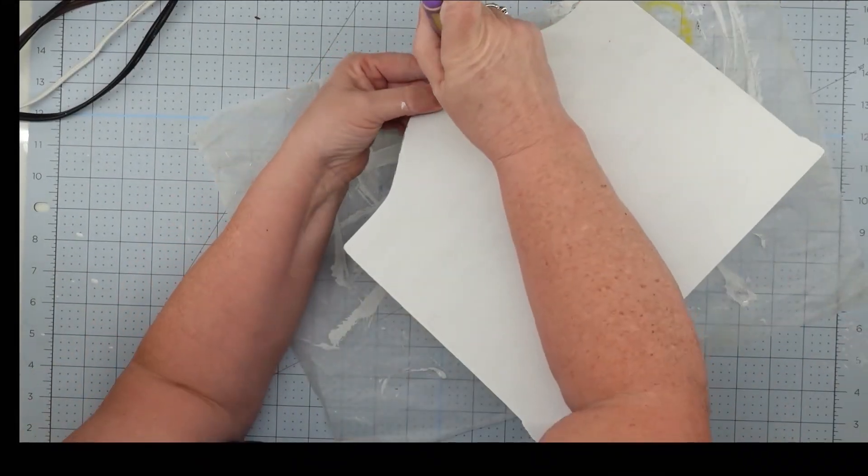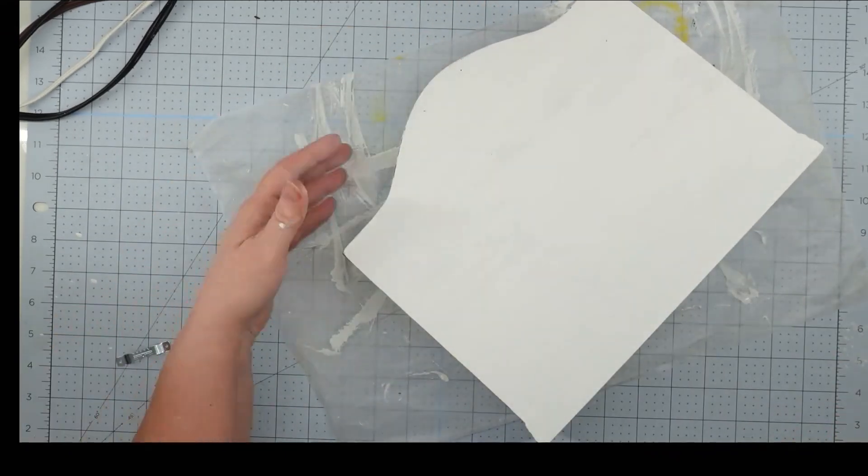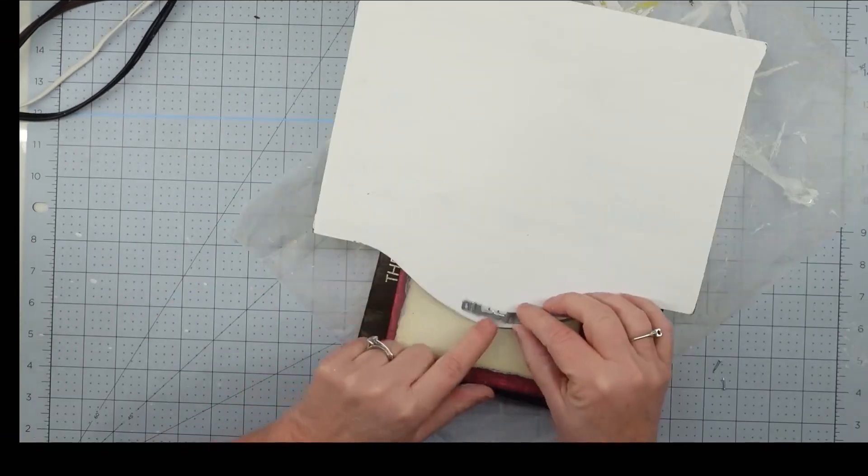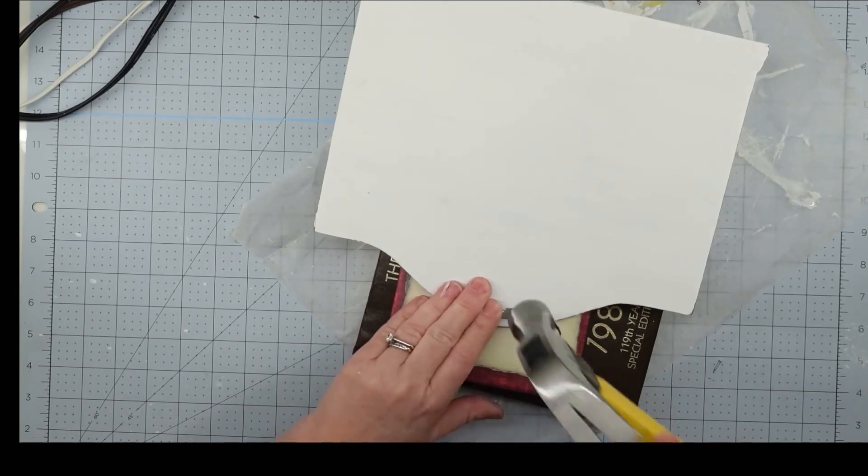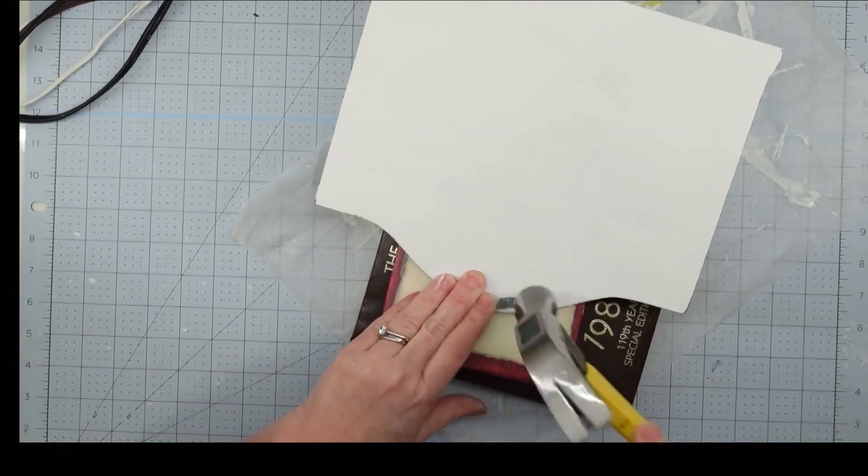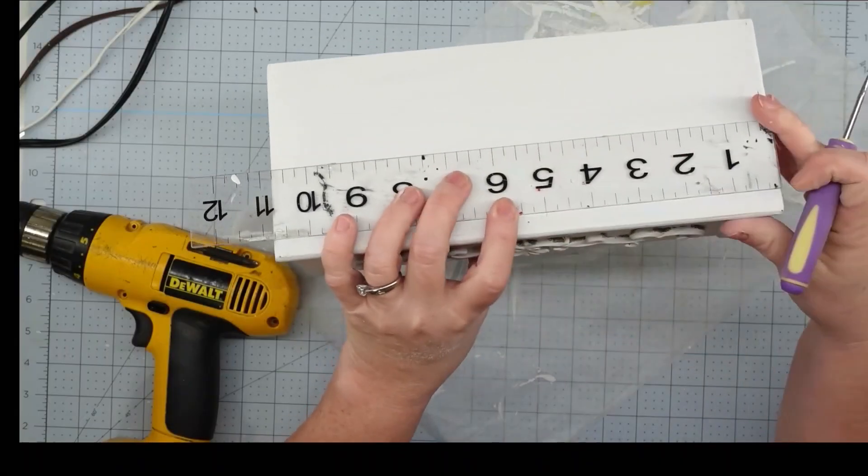Now since they have very limited counter space, I knew they wanted something they could hang up, and this would be easily modified to do so. I found the center on the back of this, and then I'm just going to give it some support by putting a book under it, and I'm going to nail on a sawtooth hanger.